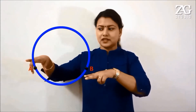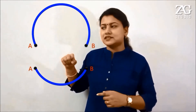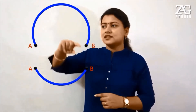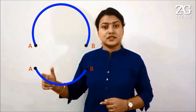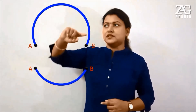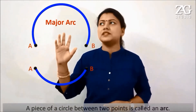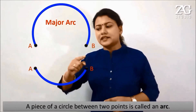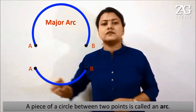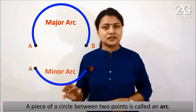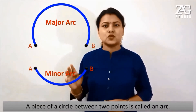Now let us look at arcs. If I take a circle and cut it at two points A and B, I will get two pieces of the circle. The longer piece is the major arc and the shorter one is the minor arc. An arc is a piece of a circle.